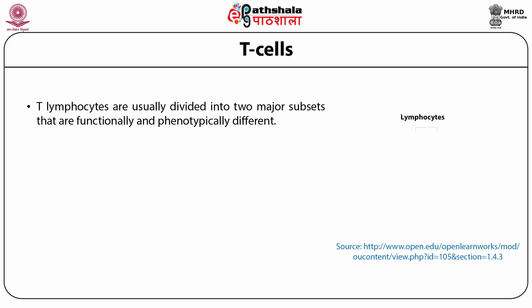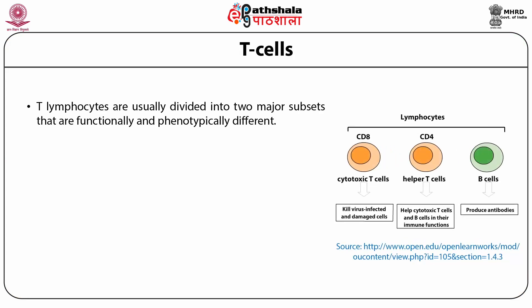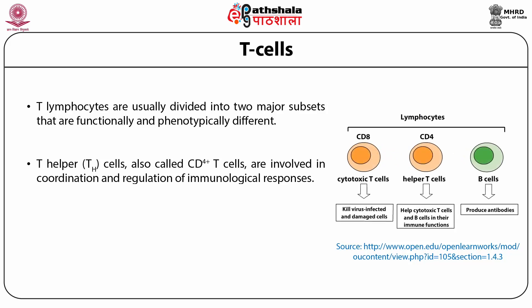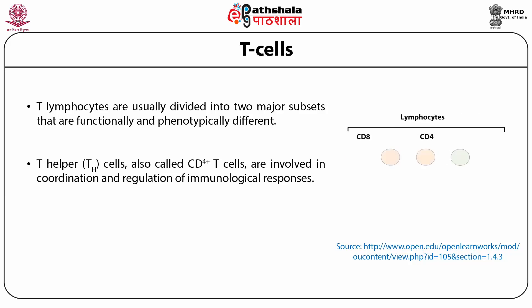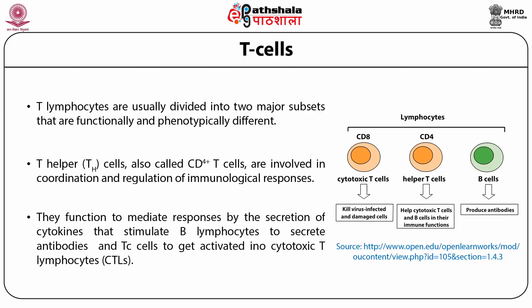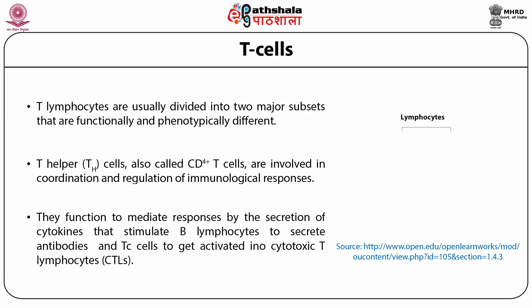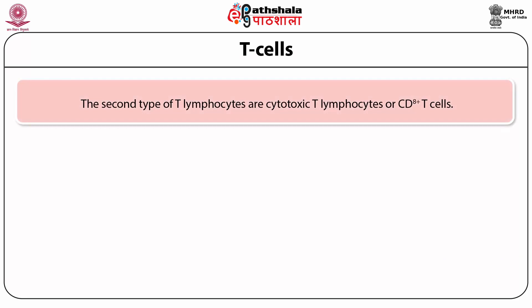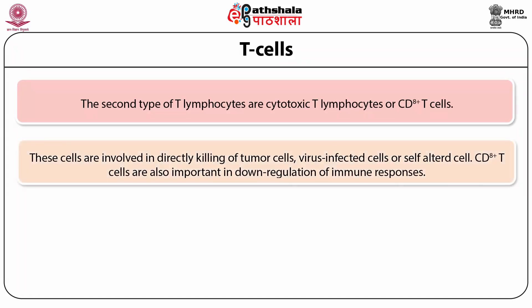T lymphocytes are divided into two major subsets that are functionally and phenotypically different. T helper cells, also called TH cells or CD4-positive cells, are involved in coordination and regulation of immunological responses. They function by secreting cytokines that stimulate B lymphocytes to secrete antibodies and stimulate TC cells to get activated into cytotoxic T lymphocytes. The second type of T lymphocytes are cytotoxic T lymphocytes, or CD8-positive T cells. These cells are involved in directly killing tumor cells, virally infected cells, or self-altered cells.